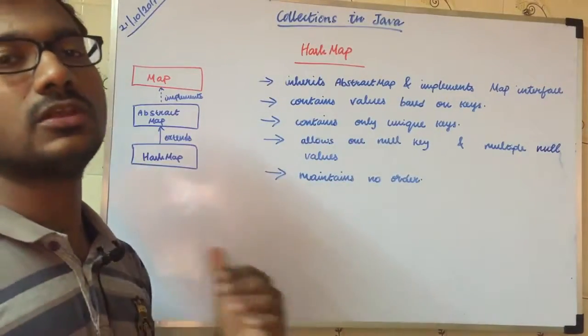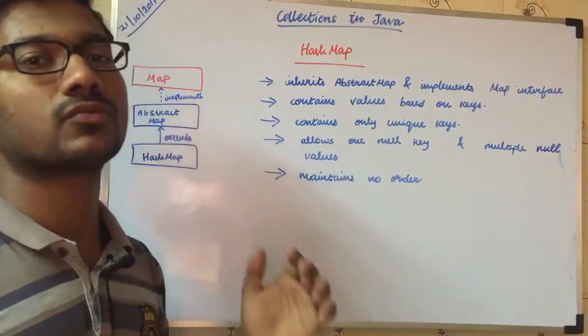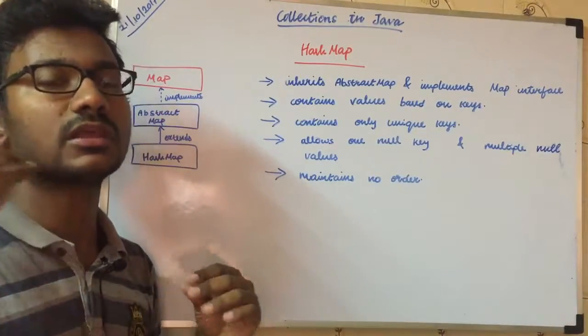HashMap maintains no order. Three words: some sorted, linked words, some insertion. That's why it's a general terminal.